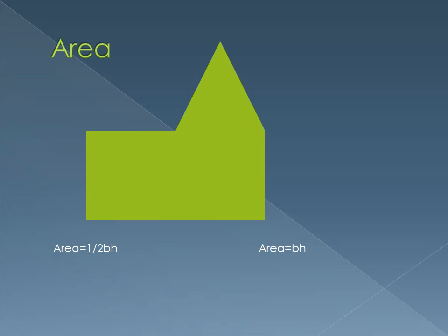Let's say you want to find the area of this shape. A lot of people will start freaking out because they don't know the formula for a shape like this, but it's really easy if you just realize that this is a rectangle with a triangle attached to it. So you can find the area of the rectangle and then add it to the area of the triangle.